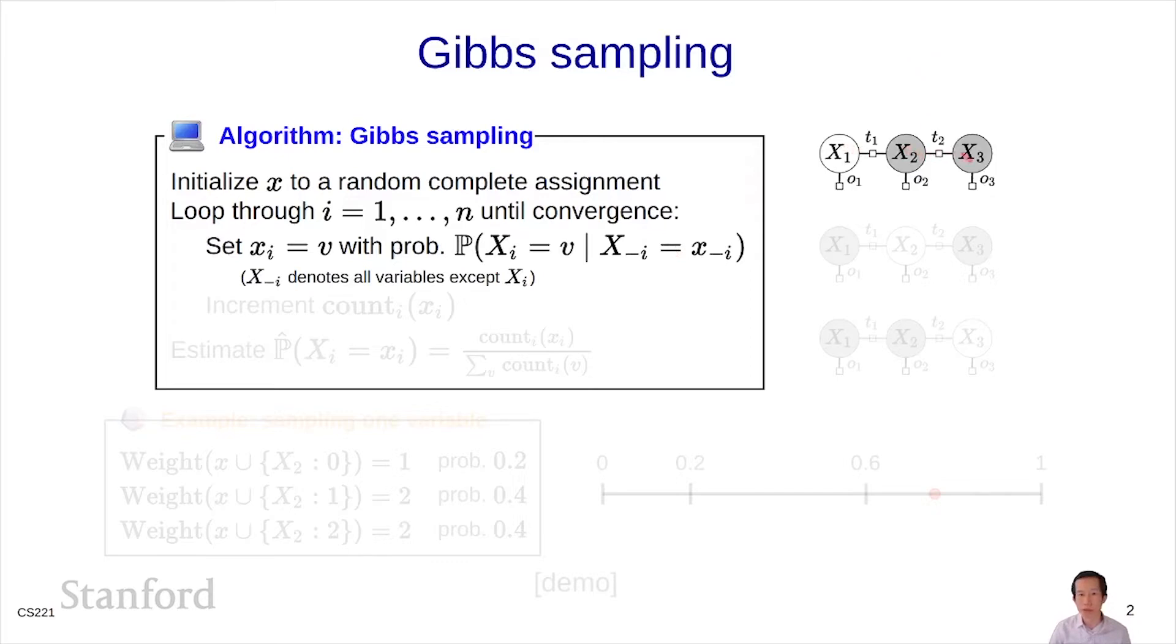Suppose you have three variables. Gibbs sampling is going to try to sample x1, holding the other ones fixed. And now it's going to move on to x2, holding the others fixed, and update x2, and then go to x3. And then it's going to cycle back to x1, x2, x3, and so on.